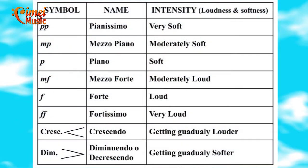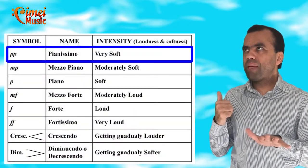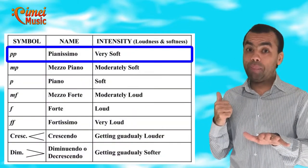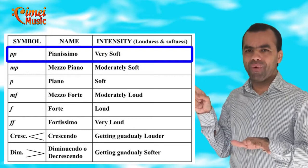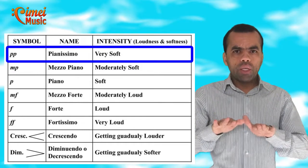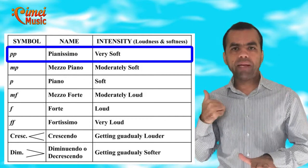Doesn't matter which language you're going to read in music, you're going to see many Italian terms. For example, when the music is very soft — very, very soft — we're going to call it PP. What is PP? Pianissimo. That is the lower volume. In Italian, pianissimo means very soft.